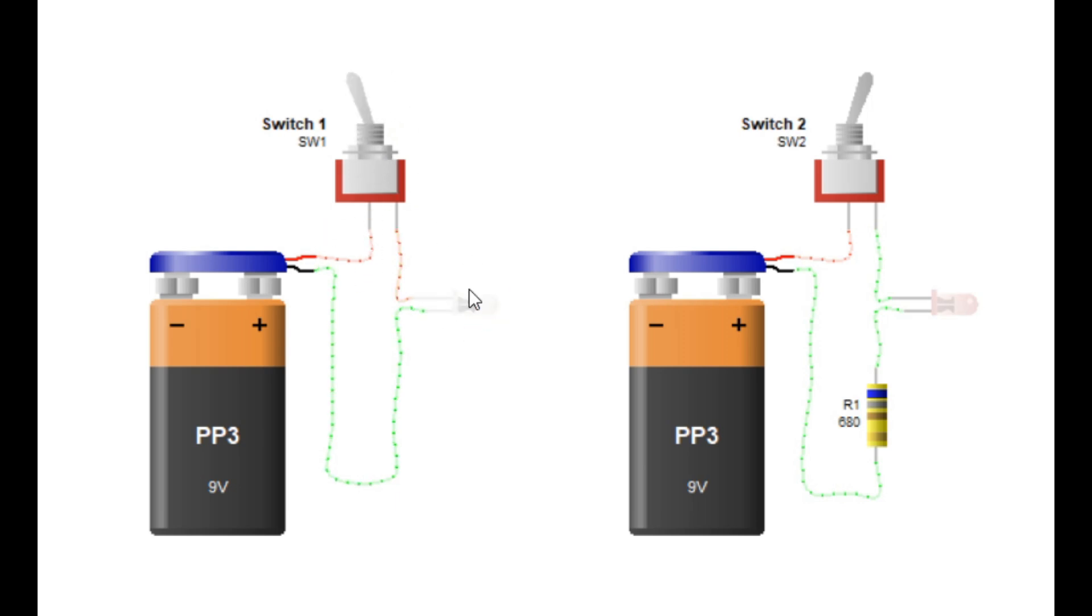What is the forward voltage drop of a red LED? Different colored LEDs have different forward voltage drops. For a red LED, the forward voltage drop is typically around 1.8 to 2.2 volts. This means if you supply 9 volts, the LED will use about 2 volts, and the resistor needs to handle the remaining 7 volts.